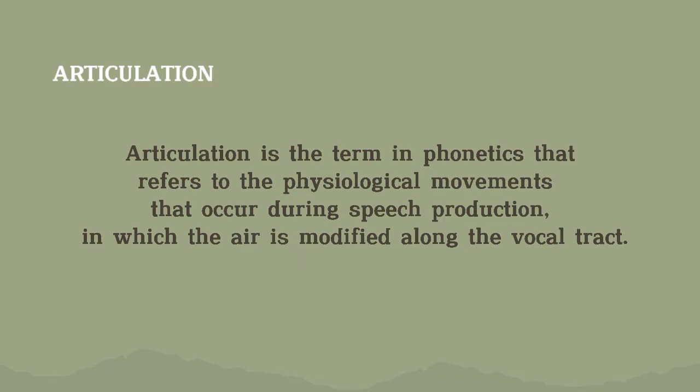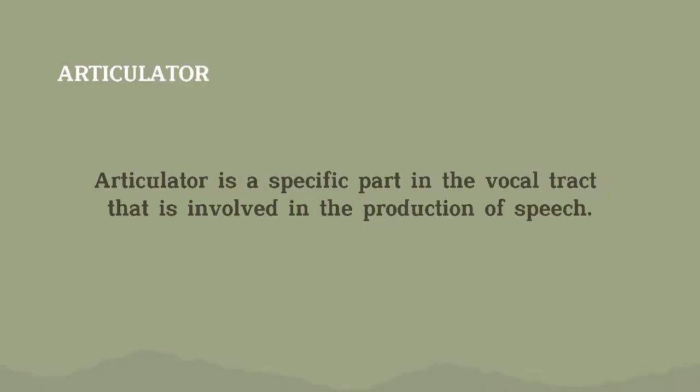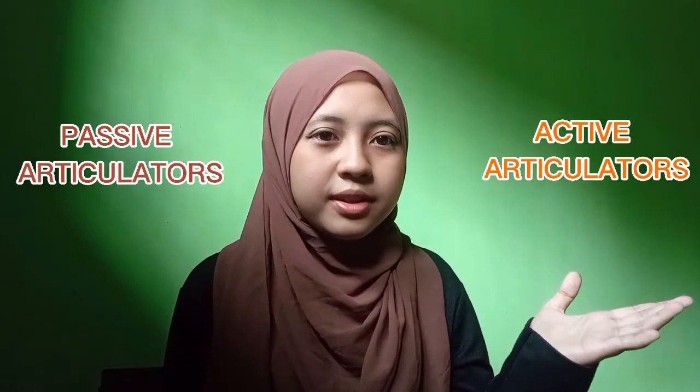How about articulator? An articulator is a specific part in the vocal tract that is involved in the production of speech. We need two articulators to produce speech sounds — they are passive articulators and active articulators.